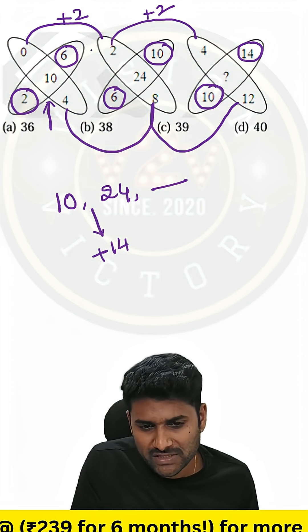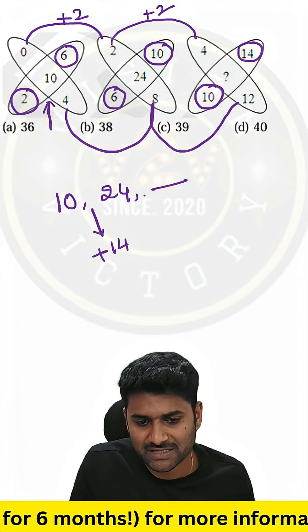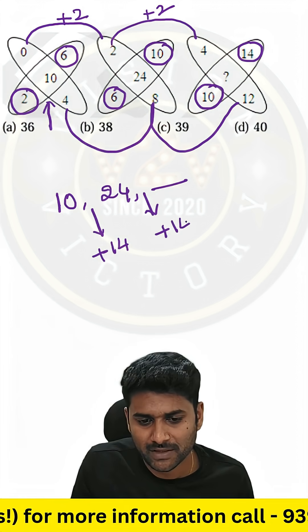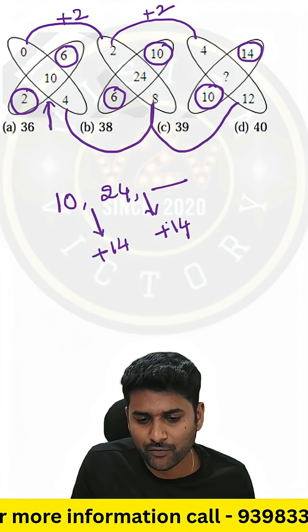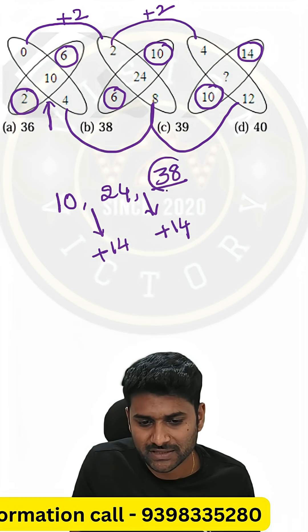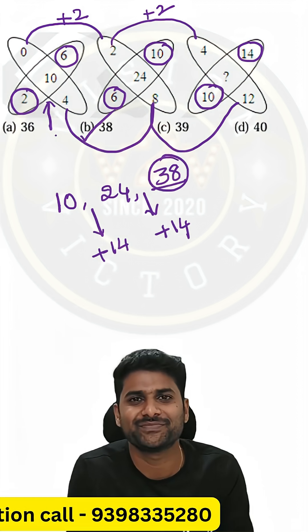In every logic we are adding the same number, that's why we have to add the same number. So 24 plus 14 is equal to 38 — that's your answer.